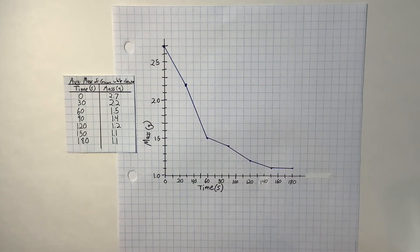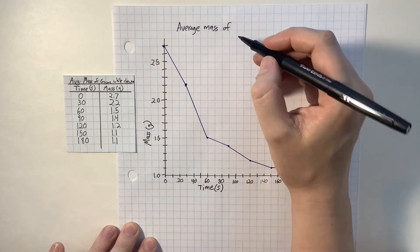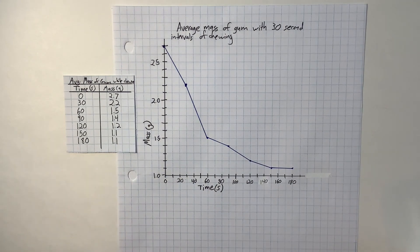The other thing my graph really needs is a title. Without a title, I just have a bunch of information. The title should tell you the relationship between the two factors and any other information about the experiment — it's a very analytical process, not creative writing. You want something very specific that tells exactly what the graph shows. For example: 'Average mass of gum after 30-second intervals of chewing.' I want a title that tells the story of what's being represented. Also, in labeling, don't skip around and don't only write the numbers for which you have data — that messes the whole chart up.